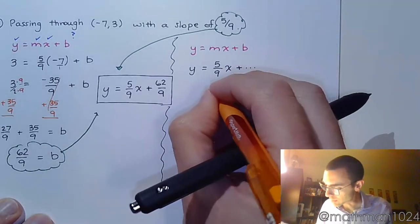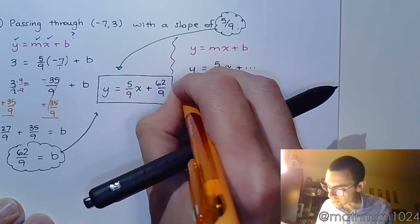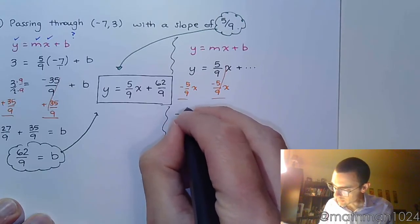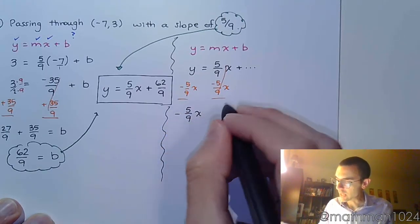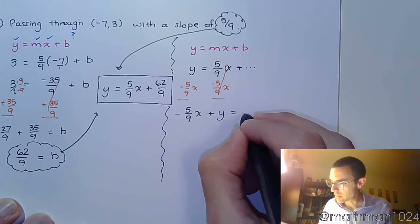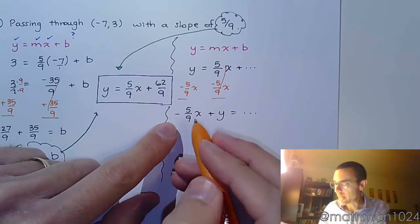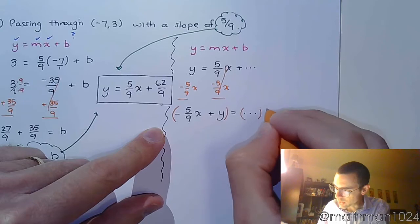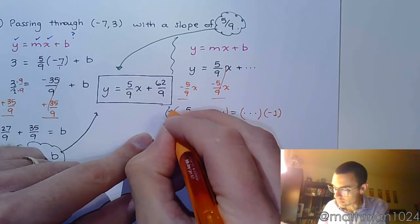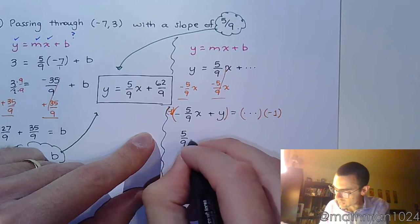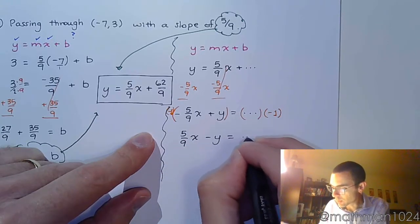So let's subtract 5 ninths x on both sides. Like this. We have negative 5 ninths x plus y equals something. Now, again, I don't know what that constant is on the other side, and I really don't care right now. What I do care about is putting this in standard form. So what we're going to do is, first let's get rid of this negative. He's just kind of in the way. So I'm going to multiply both sides of the equation here times negative 1. And in doing that, I have positive 5 ninths x minus y equals still something I don't know.